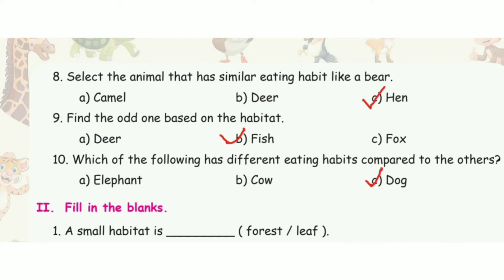Eighth question: select an animal that has a similar eating habit to a bear. The answer is option A, crow. Ninth question: find the odd one out based on the habitat. The answer is option B, fish.